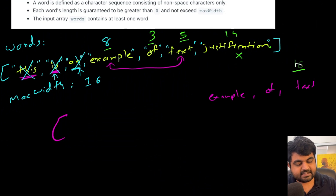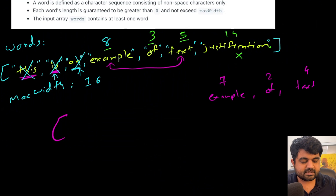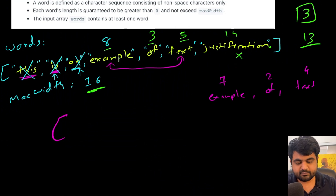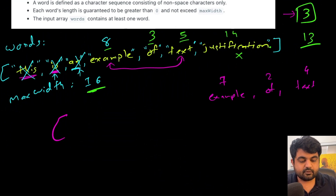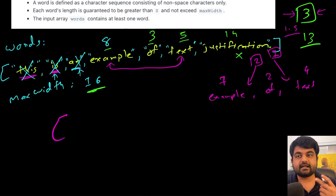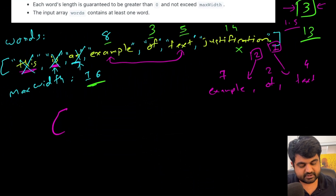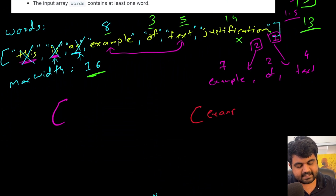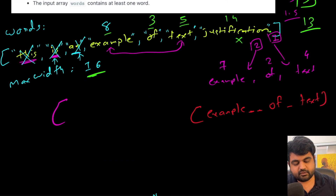Without the extra space offset, 'example' = 7, 'of' = 2, 'text' = 4, totaling 13 characters. We need 3 more spaces to reach 16, but 3 doesn't divide evenly across 2 gaps. So we put 2 spaces between 'example' and 'of', and 1 space between 'of' and 'text'. The second line is: 'example  of text', exactly 16 characters.